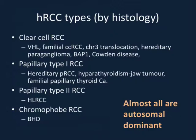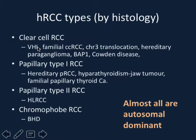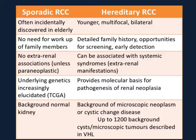Hereditary subtypes can be grouped by syndrome or histology, and this list is constantly changing with new subtypes being defined and more driver mutations identified. The most familiar ones are VHL leading to a clear cell phenotype, hereditary papillary RCC leading to a type 1 phenotype, hereditary leiomyomatosis RCC leading to an aggressive type 2 phenotype, and Birt-Hogg-Dubé leading to a chromophobe phenotype. For exam purposes, almost all of these are autosomal dominant — a classic question that has come up on some exams.